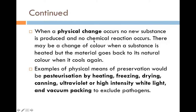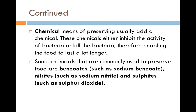If we're looking at this content here, you want to make sure you write notes highlighted in the bold part. You can stop and pause any moment and take notes, but don't write everything down. Now let's compare this to chemical preservation techniques. When we say chemical, it means preserving usually by adding a chemical. These chemicals either inhibit the activity of bacteria or they outright kill them, therefore enabling the food to last a lot longer. Some of these include benzoates, nitrites, and sulfites.